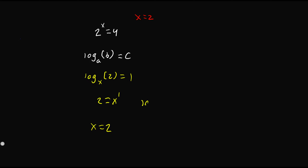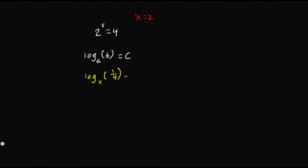This makes the equation true since log base 2 of 2 equals 1. Now let's look at a more difficult one where we have log base x of 1/4 is equal to 2. We're going to take x squared is equal to 1/4. We're going to have two different solutions but we have to verify which one is true. Since we're taking x to the power of 2, we get x is equal to plus or minus the square root of 1/4.